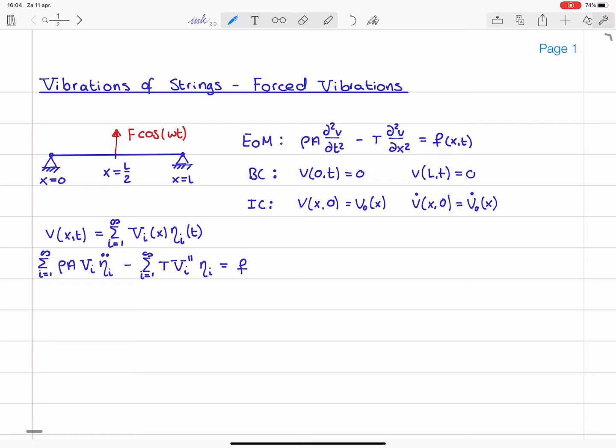Now, I'm going to multiply the entire equation by vj, and then integrate over the length of the string. And this second term, the stiffness term, I will manipulate using integration by parts, similarly as what we did before.